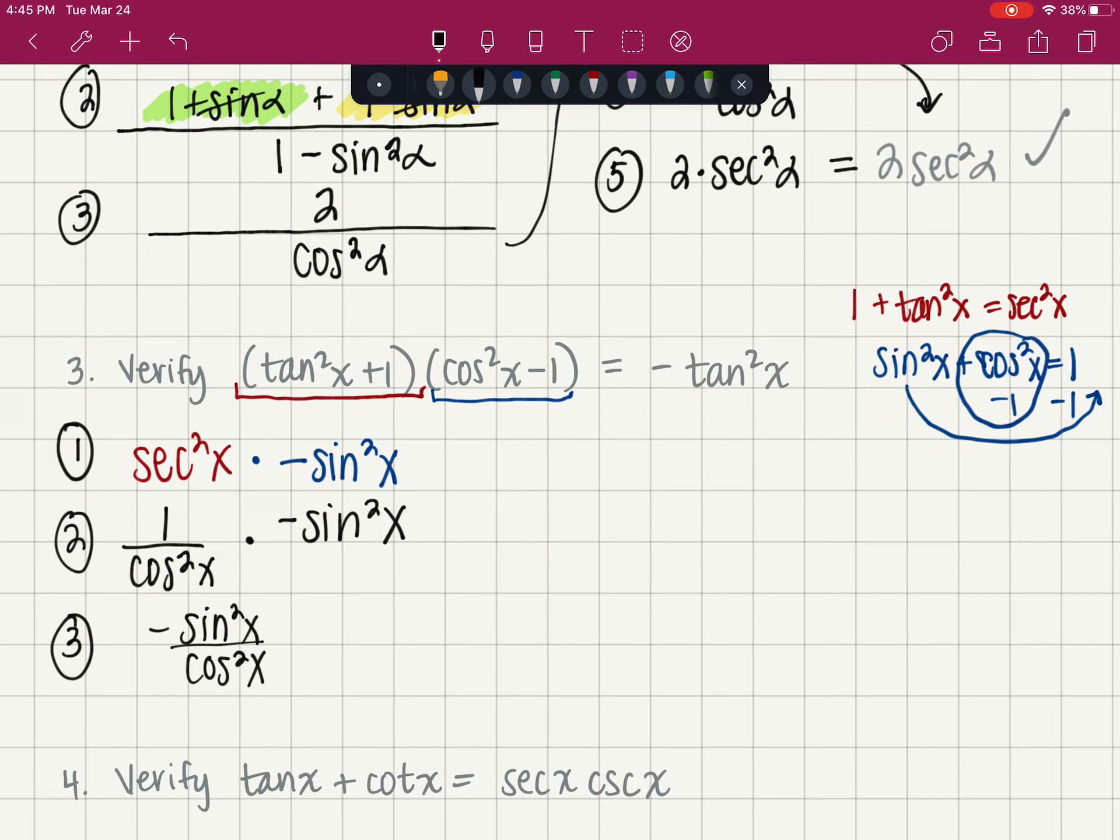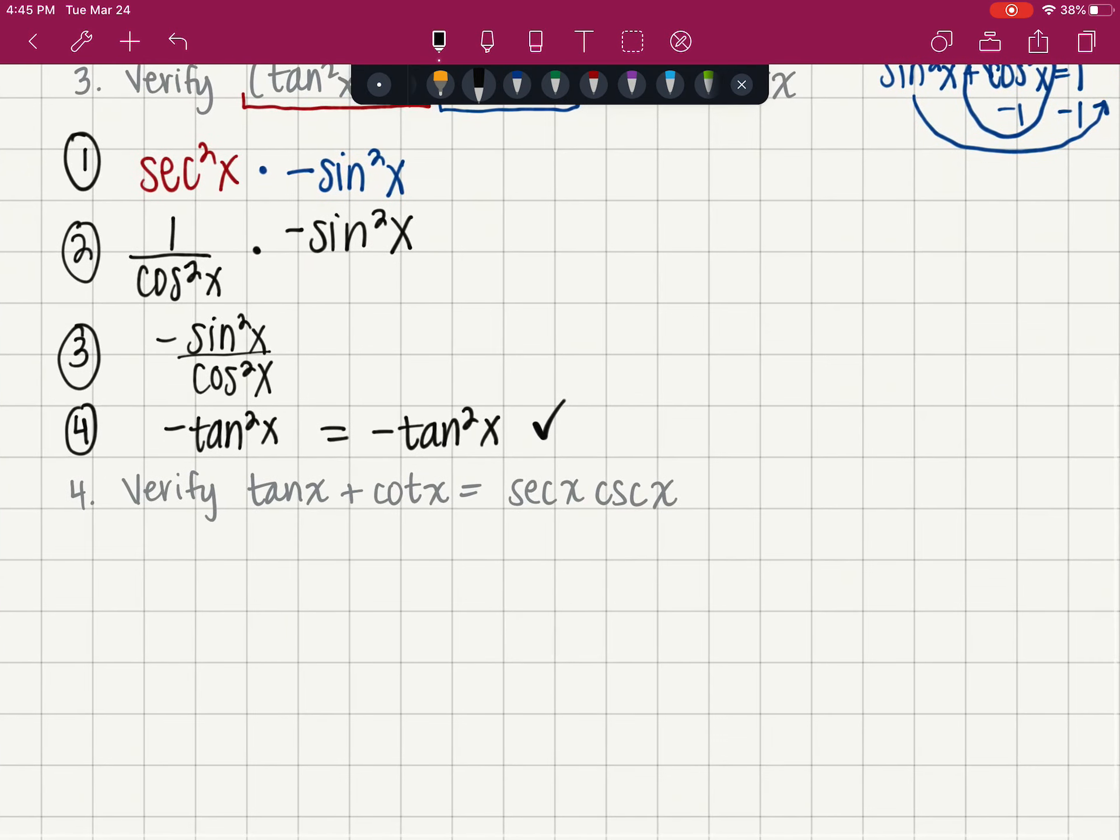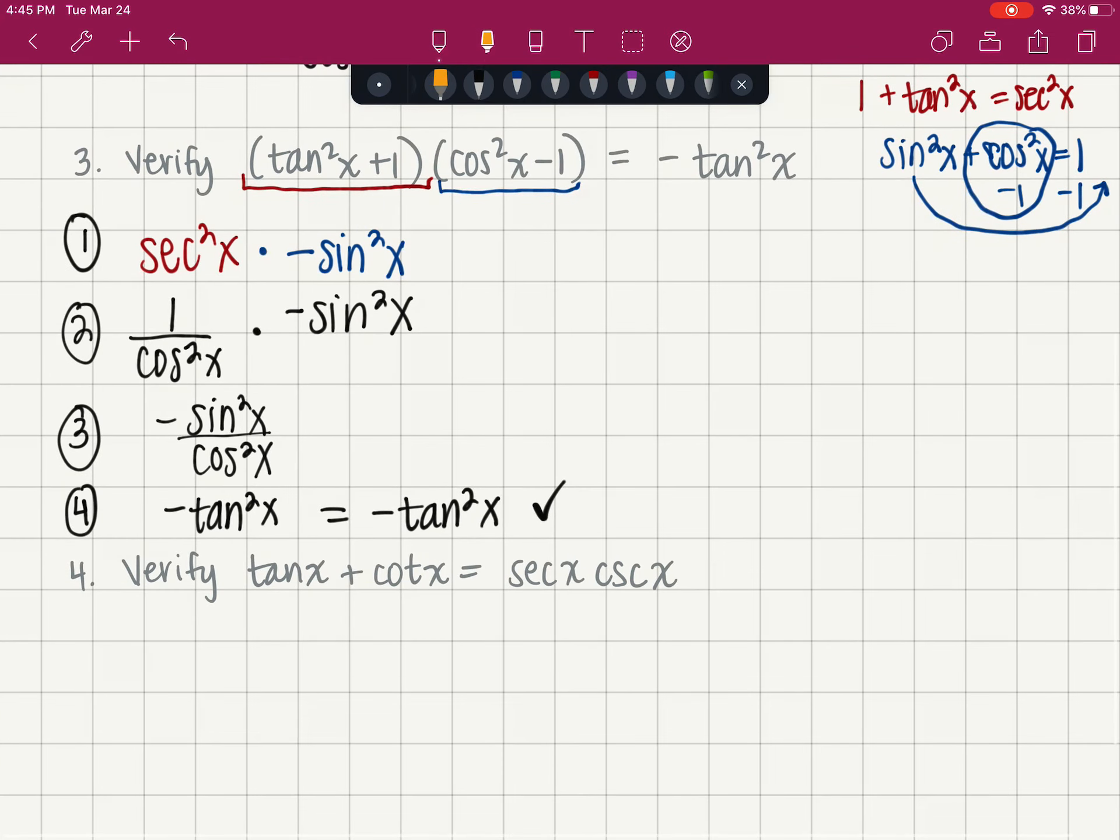And then multiply across for our fractions, and we get negative sine squared of x over cosine squared. Now this is where you might get excited and say I'm done, because that's negative tangent squared. However, we have step four. We have to make it look exactly like the right-hand side of the equation. So that's where I have that mirror image with an equal sign in my very last step. Put a little check mark, and we're good to go. If you're going to highlight your answer, this is actually your entire answer.